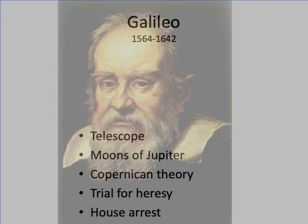Galileo had already been admonished by the Inquisition not to speak of or defend heliocentric ideas, and had complied for ten years. However, Galileo ultimately wrote of the theory, and in the resulting trial, he was forced to recant on penalty of death. After recanting, he was still held on house arrest till near the very end of his life. He is a profoundly influential person, still considered by many to be the father of science.